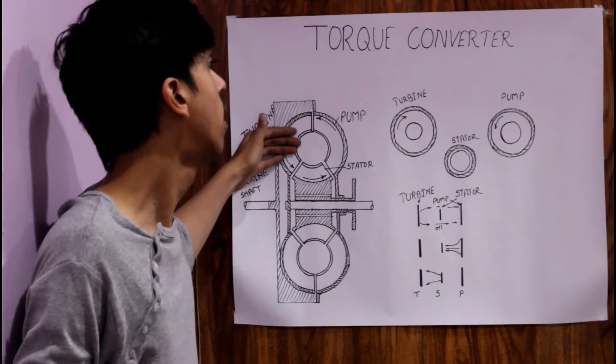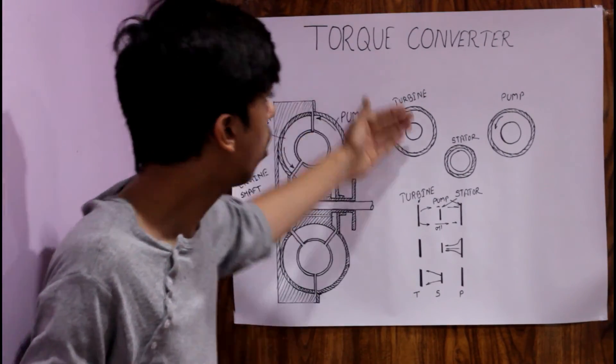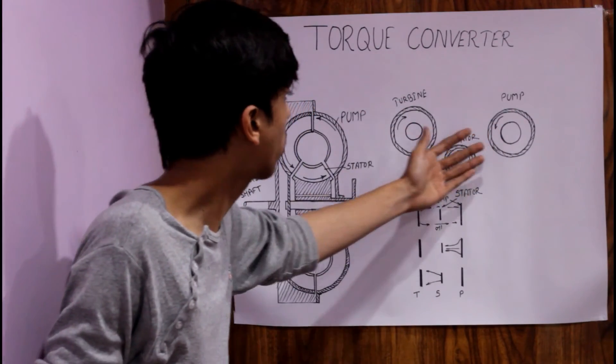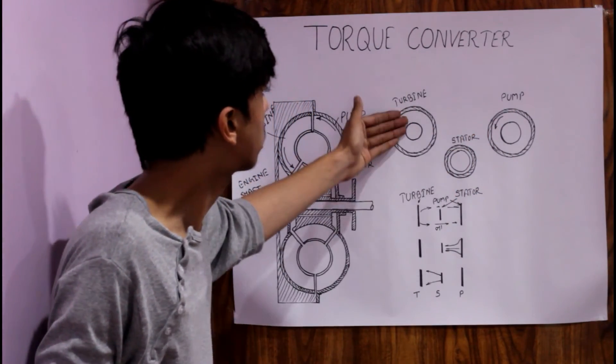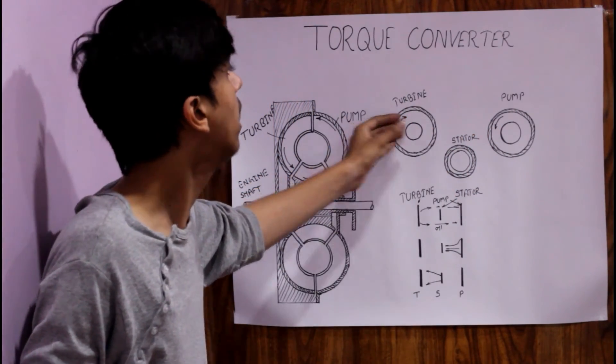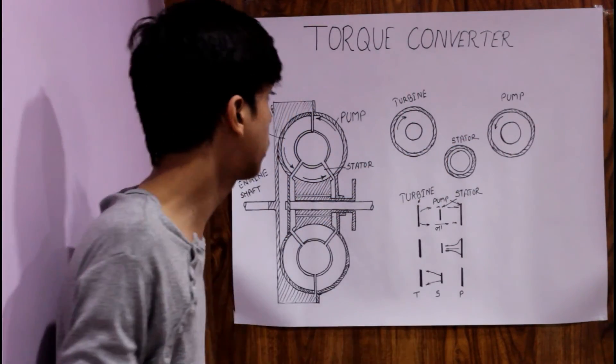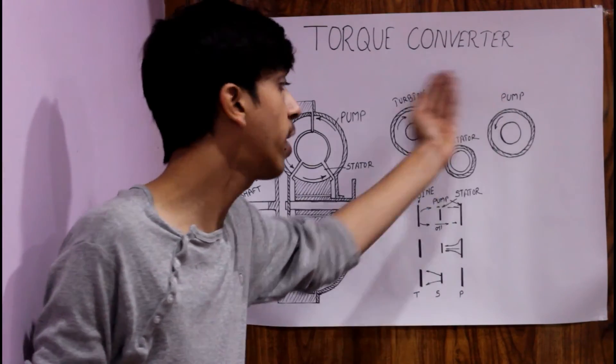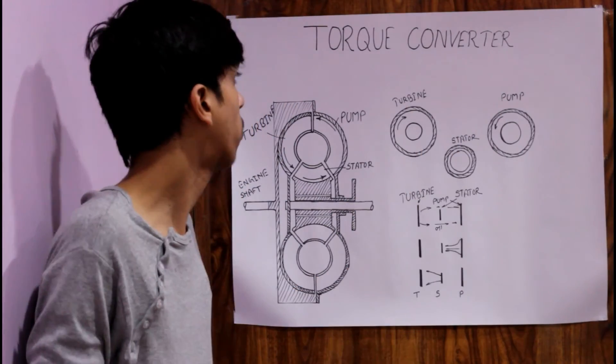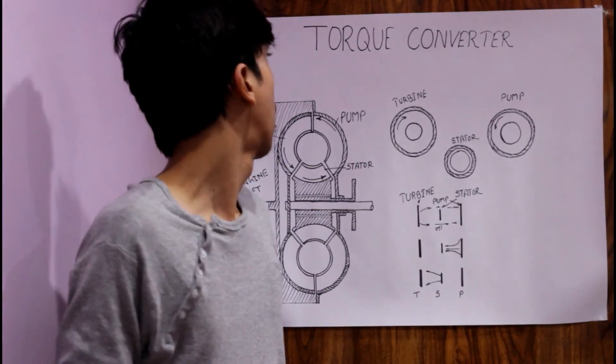This is a torque converter — this is a cut section of the torque converter. It consists of a turbine, pump, and stator. The combination of these three parts is called a torque converter.